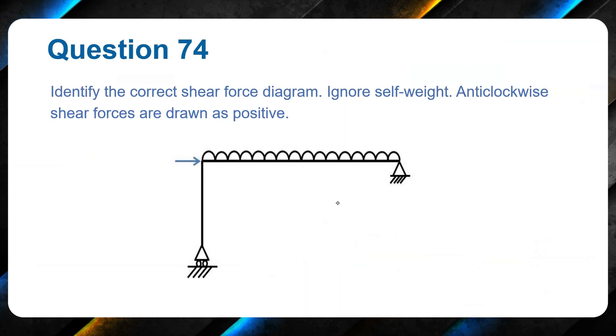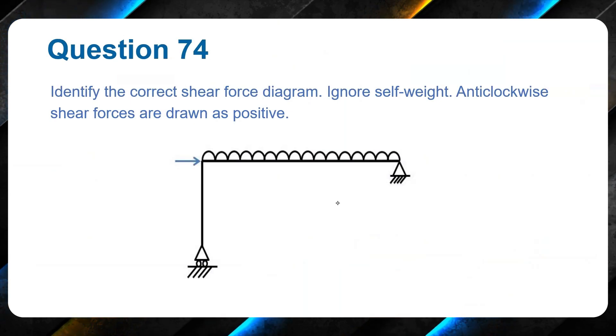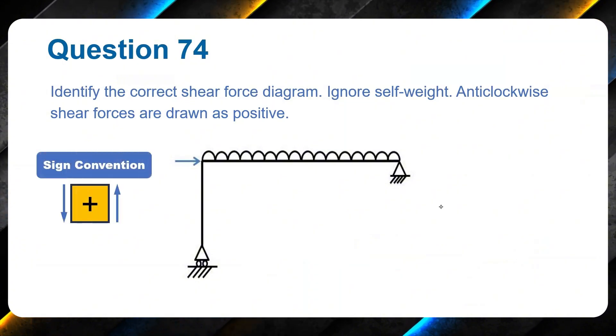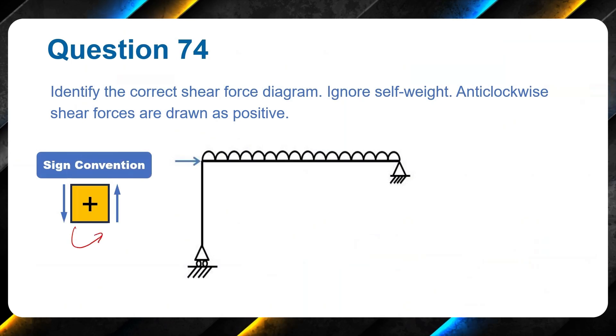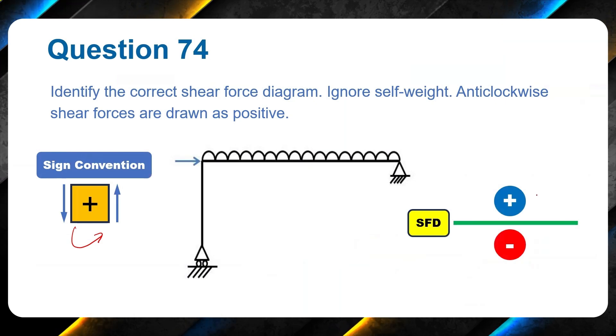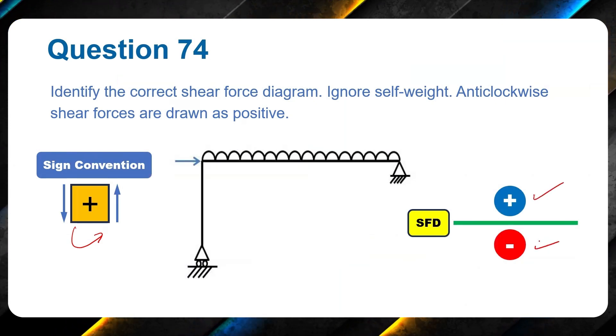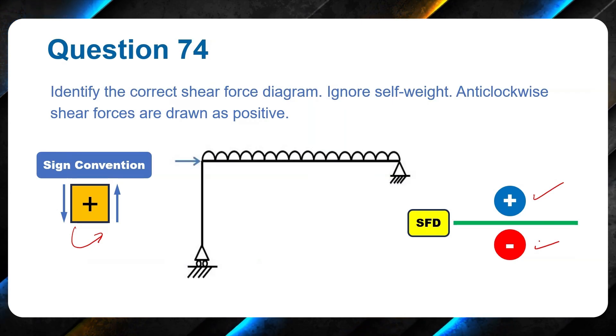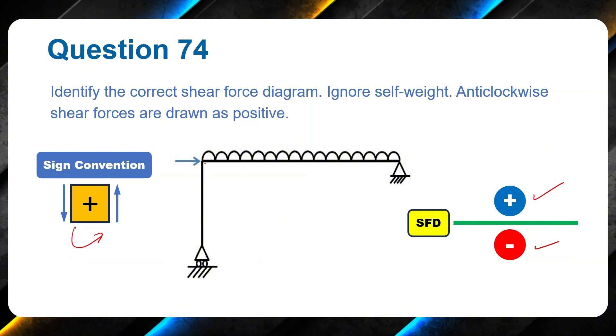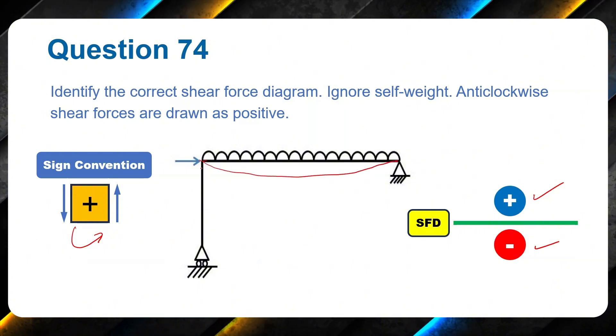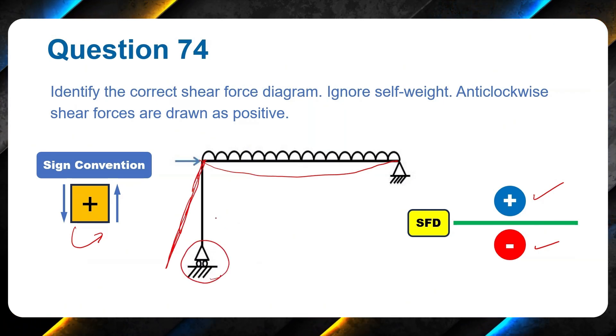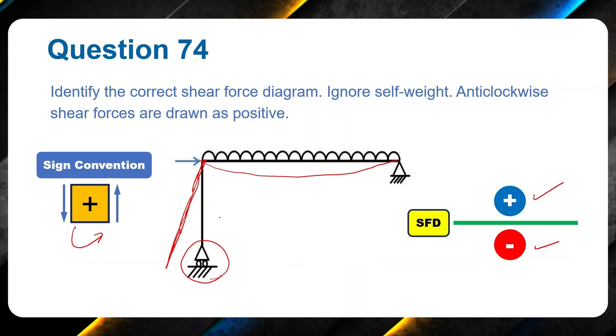Let me now move to this question. Identify correct shear force diagram. Ignore self-weight and anticlockwise shear forces are drawn as positive. This is a sign convention that we will use. Anticlockwise forces are positive. And this is how we will draw the shear force diagram. Positive upwards and negative forces downwards. To solve this question, we need to have a deflected shape. So deflected shape for this beam will be like this. No horizontal reaction is developing over here. It means that shear force in this will be zero. In this support will be zero.